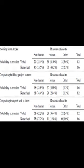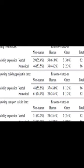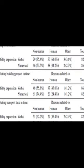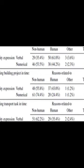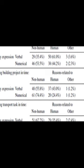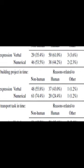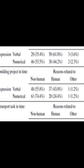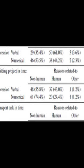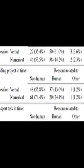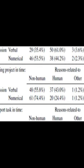People tend to express animate uncertainty using verbal probability, while they express inanimate uncertainty using numerical probability. These two types of probability are associated with each other, so that when one type of probability is used, the other type is also used.